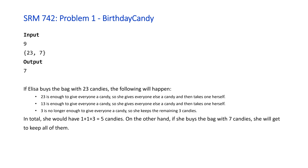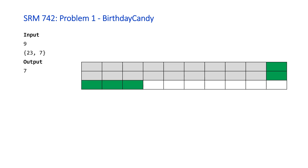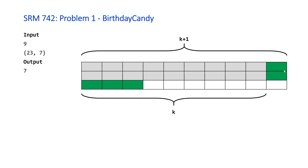So it's a pretty straightforward problem — problem 1 in the Division 2 TopCoder contest. Visually, the gray rectangles are the candies given out to other students, and the green ones are the candies Eliza gets to keep. The gray equals K (the number of students), and including Eliza herself, we get K+1.